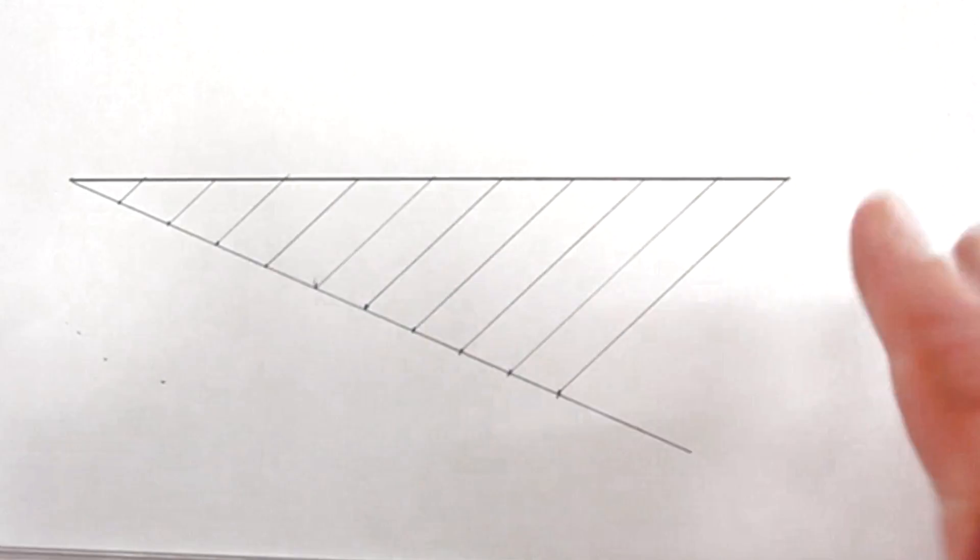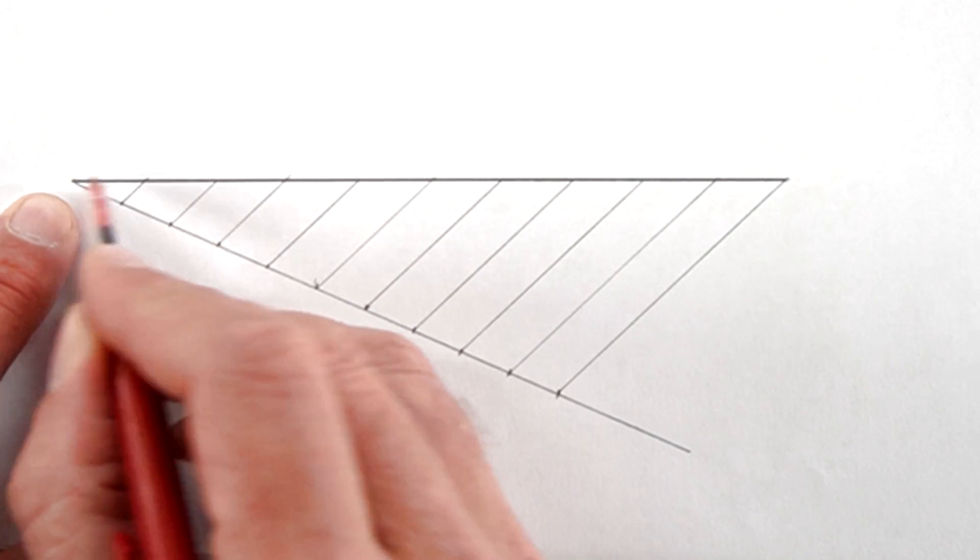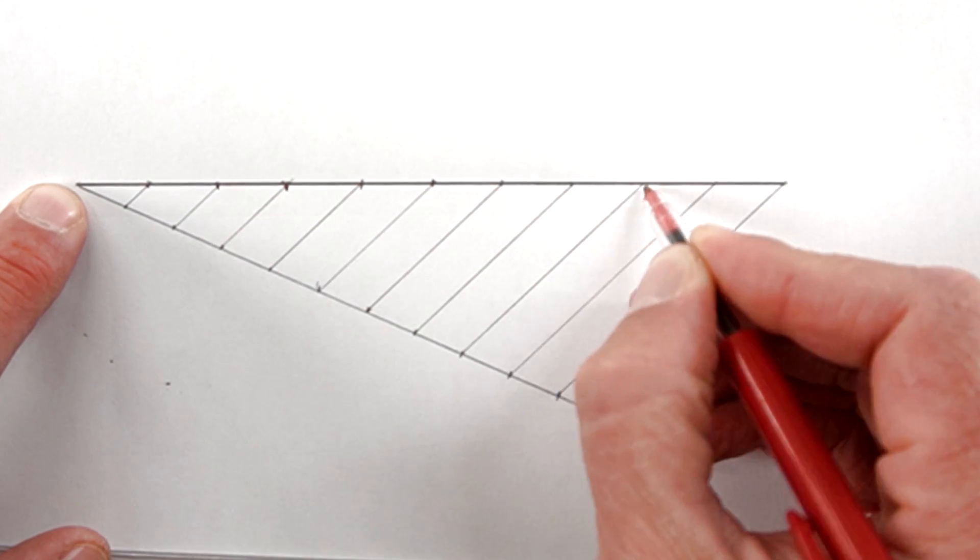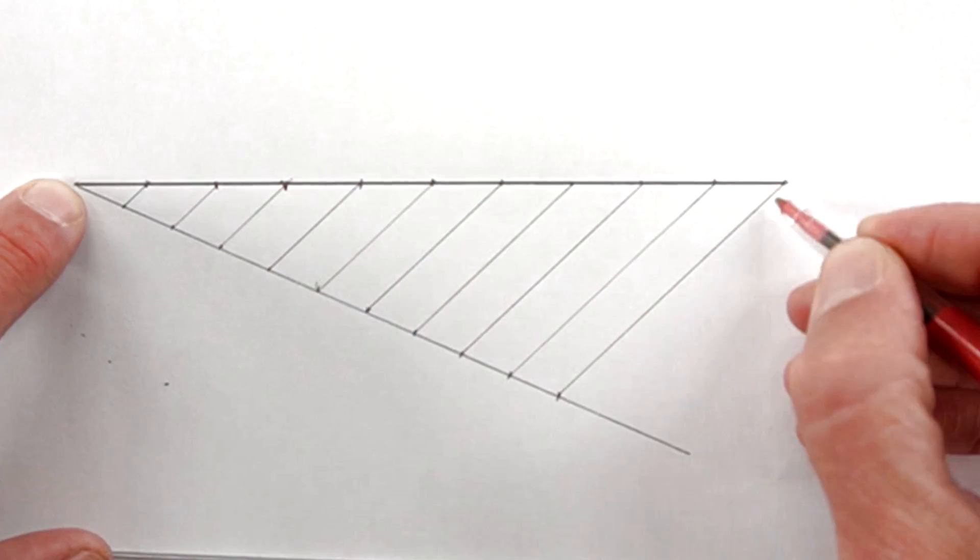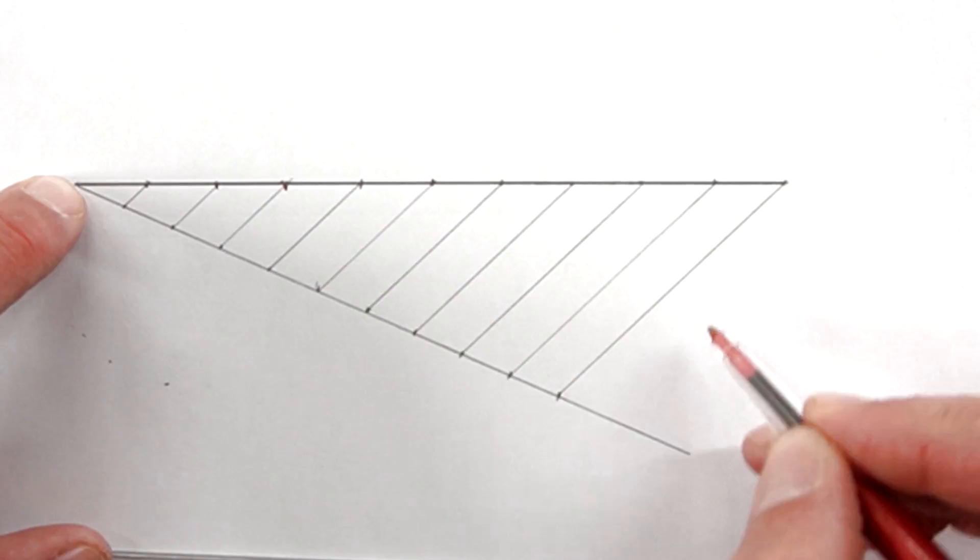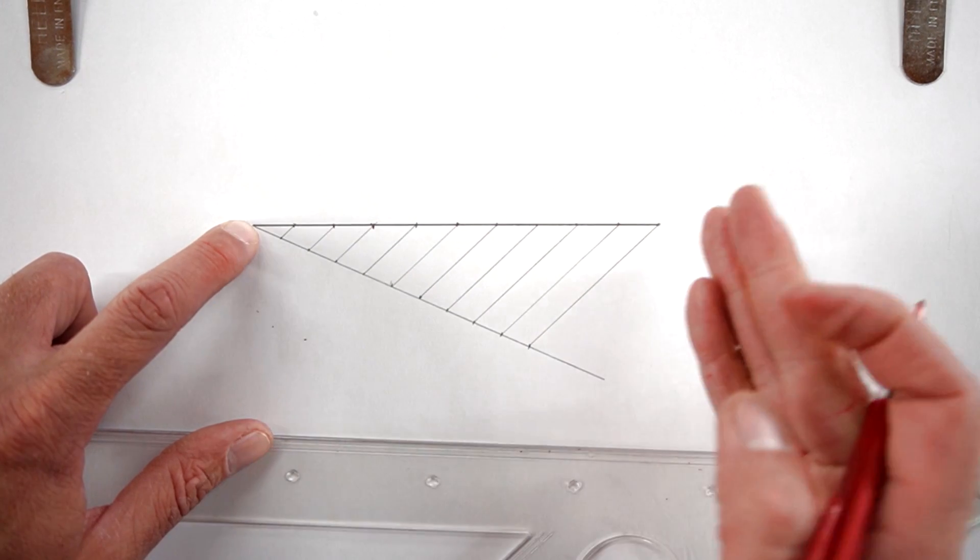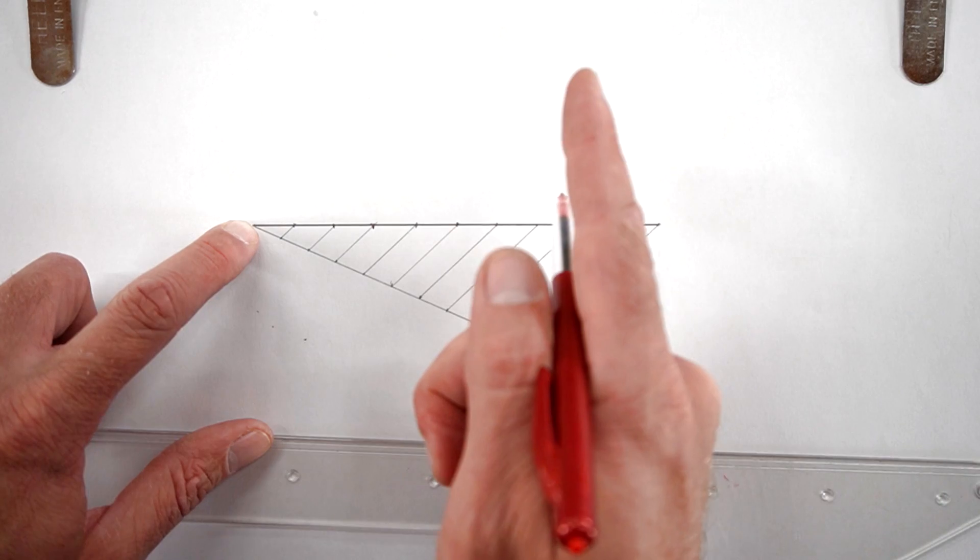And that's basically the construction method. Now if I count here, I've got my first division, second... ten divisions for my main line. That was my construction method. If you need to watch that again, please do so. Thank you for watching. Now it's your turn.